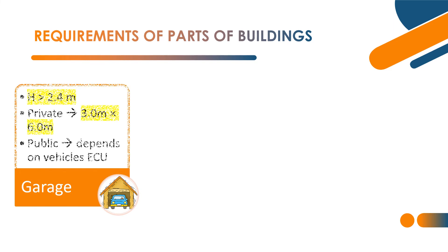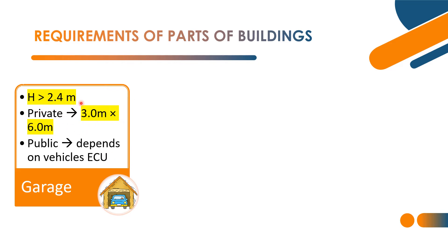Next part of the building: garage — vehicle parking room. Height of the garage shall be greater than 2.4 meters minimum to accommodate vehicles. Private garage area: 3 meters by 6 meters. For public parking, the area depends on the equivalent car unit, or ECU — equivalent car unit from traffic engineering, also called PCU, passenger car unit. Public garage area depends on the equivalent car unit to park.